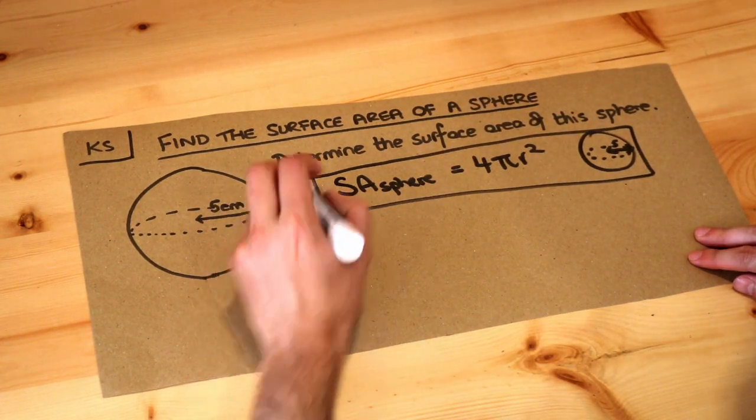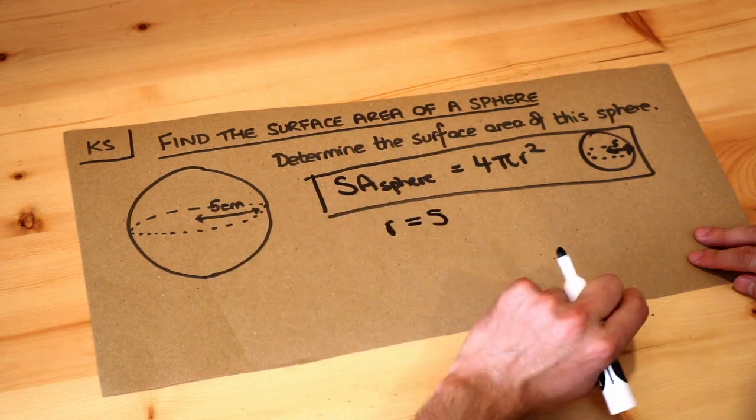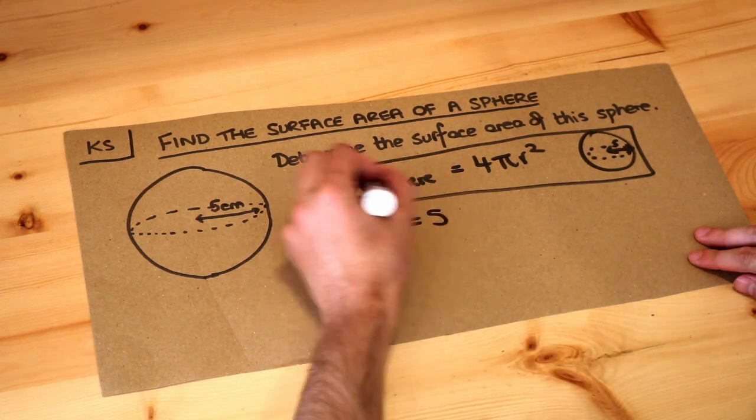So the radius here clearly is 5. It's the distance between the center of the sphere and the surface of the sphere, and we're just going to shove it into this formula.